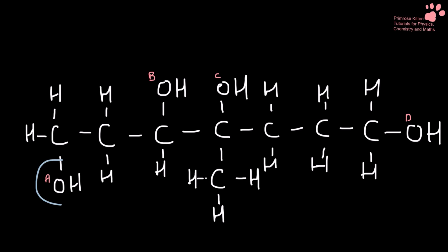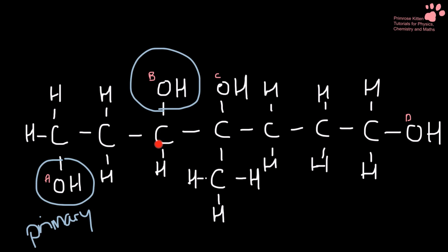So let's look at A. If we look at the carbon that it is attached to, it has two other carbons. That makes this one a primary alcohol. For B, looking at the carbon that it's attached to, there is only one carbon. That makes this one a secondary alcohol.